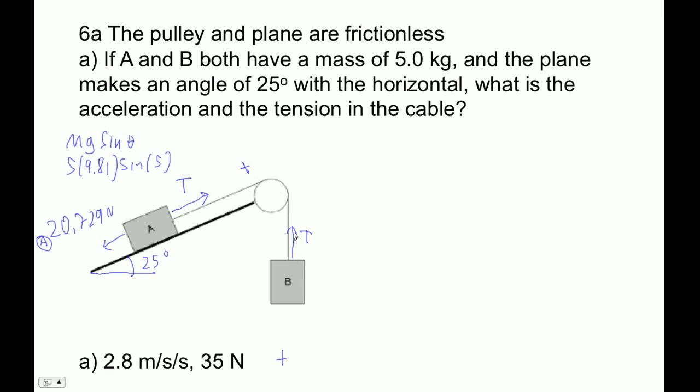So B has got the tension up, and then, of course, the force down is going to be the force of gravity. And that's going to be 5 times 9.81. That's 49.05 newtons. Let's store that in B just for fun.